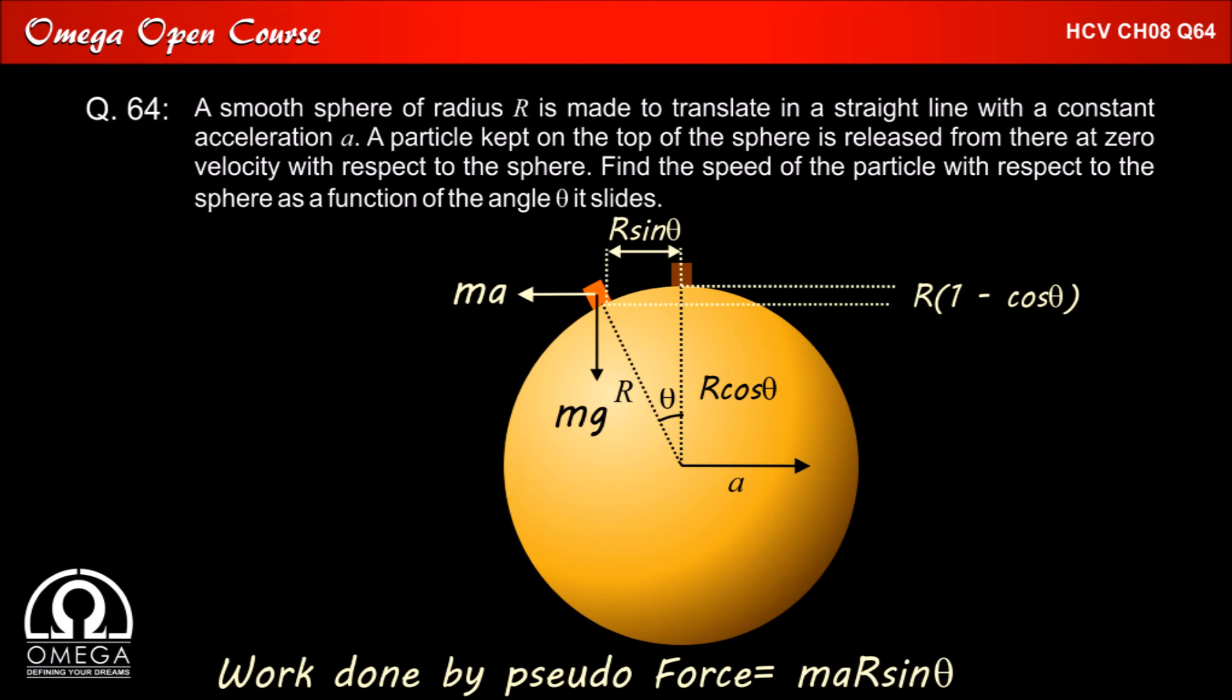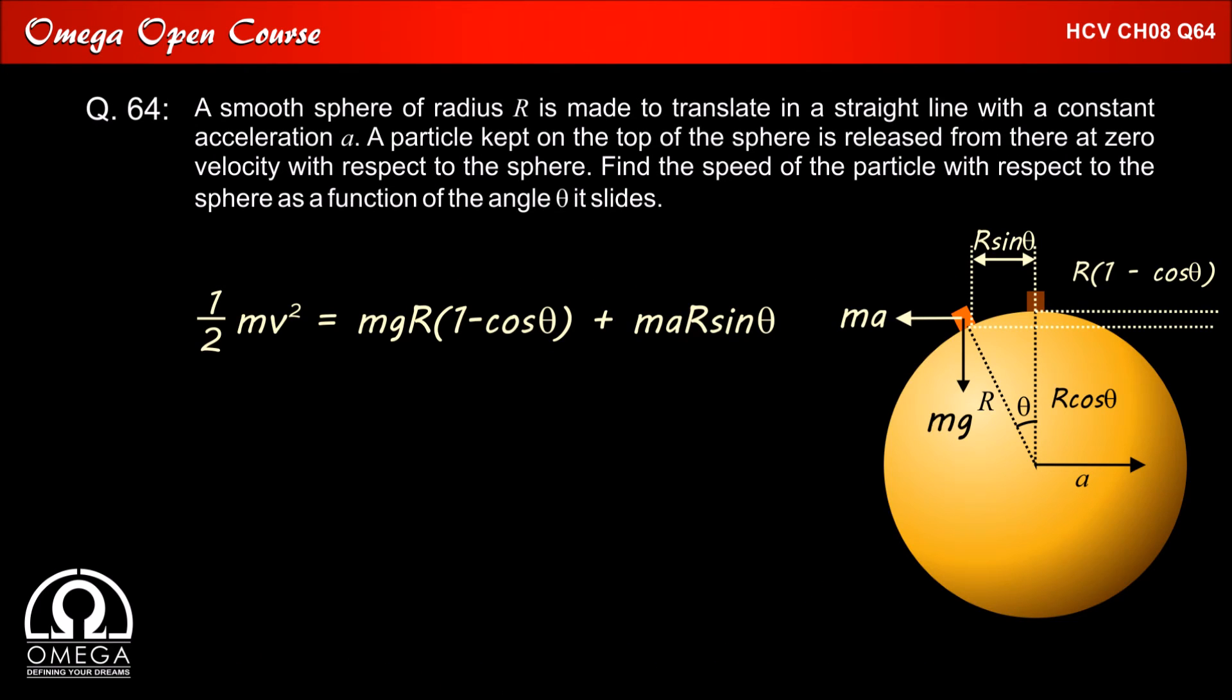Now, as per work energy theorem, the increase in the kinetic energy of the block must be equal to the work done by gravity and the pseudo-force. Therefore, half Mv square must be equal to Mg R into 1 minus cos theta plus Ma R sin theta.